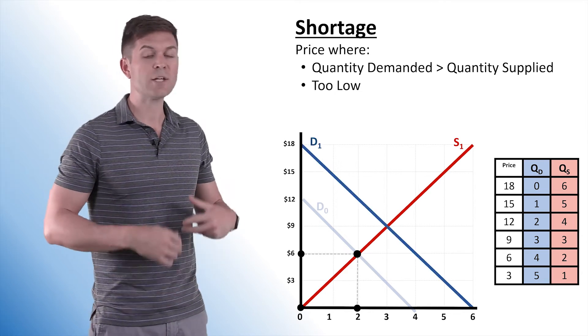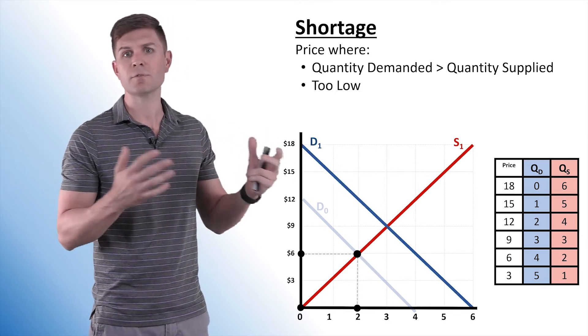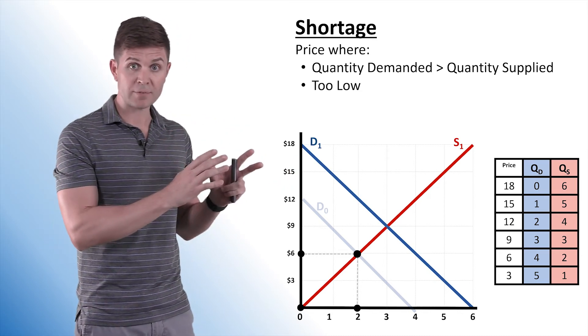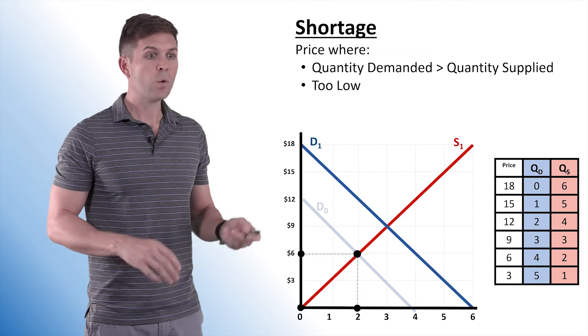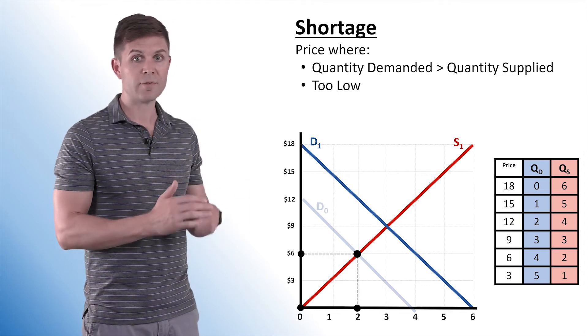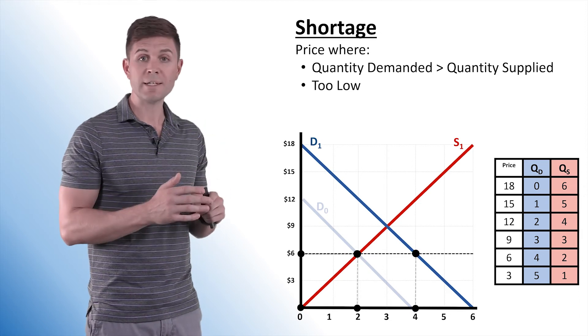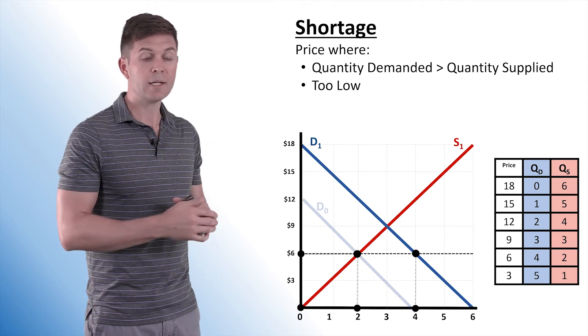And then something changes. Let's imagine that demand increased because of consumer taste changes. So we have a new equilibrium that should be established, but we're not quite there yet. We're still operating under the old price level. It hasn't quite adjusted. Under this, we see that the quantity demanded is going to be much higher. It's going to be four, but price hasn't changed yet.